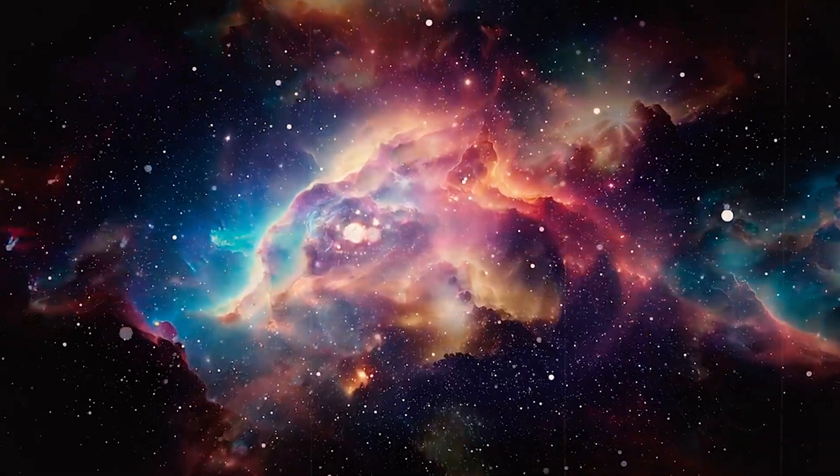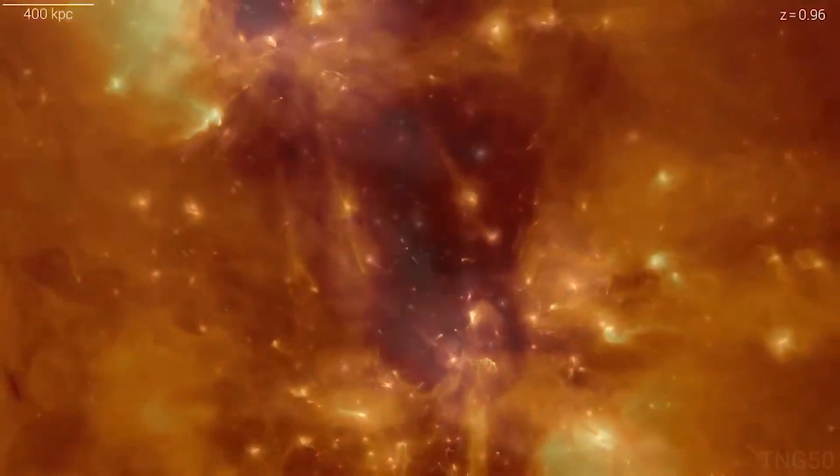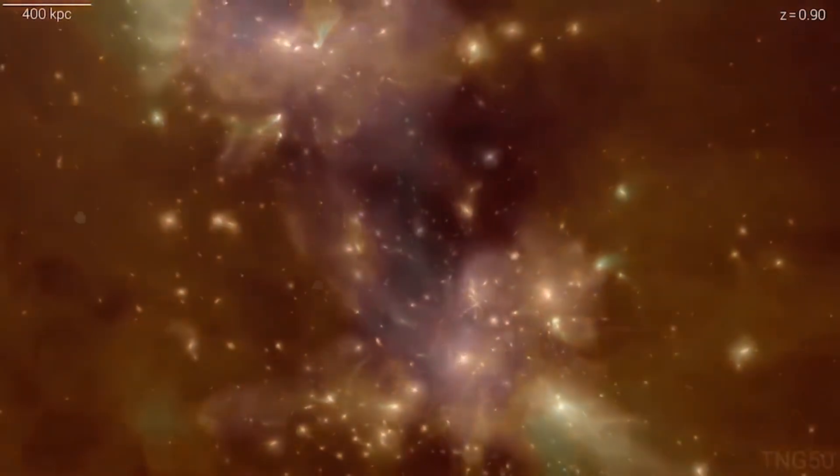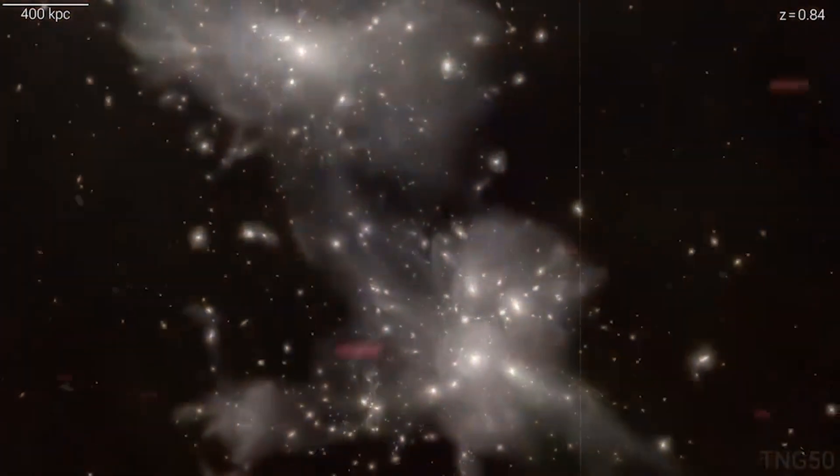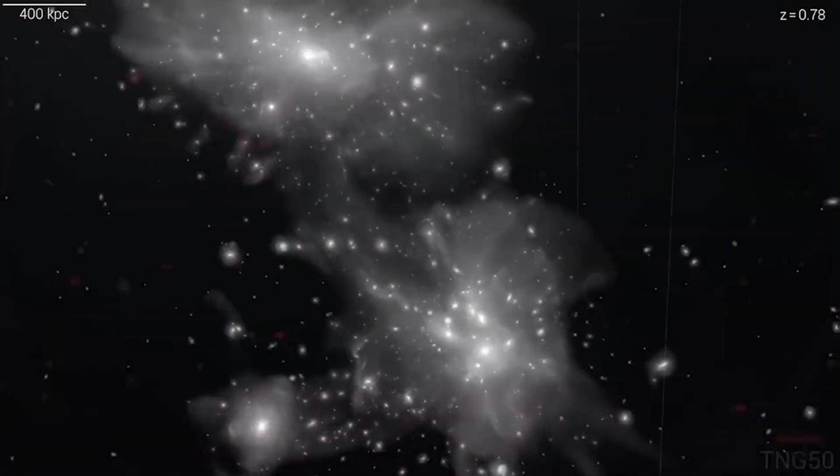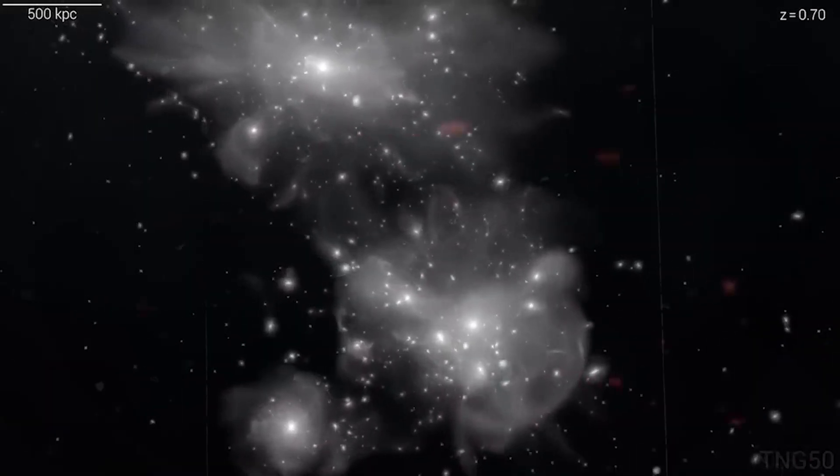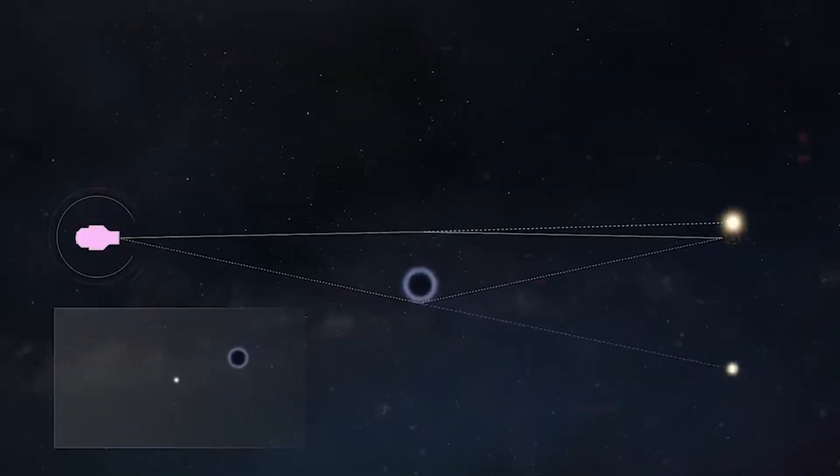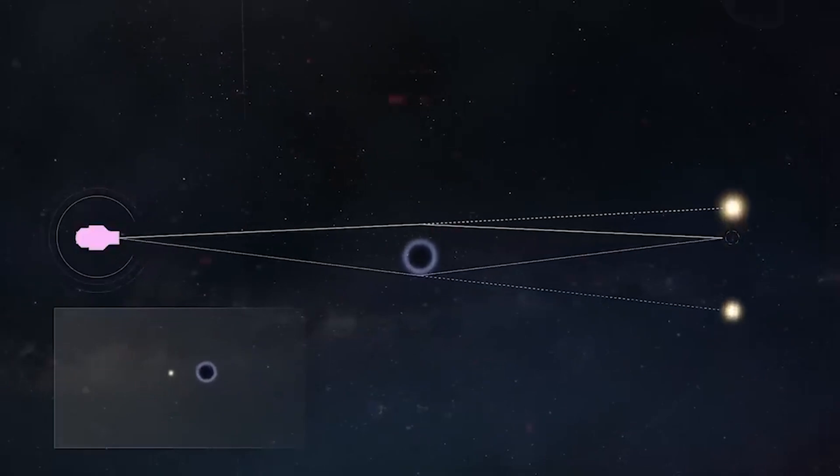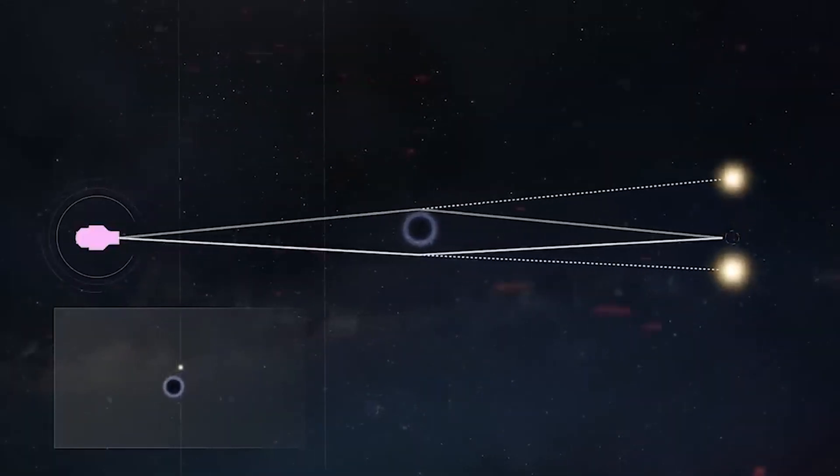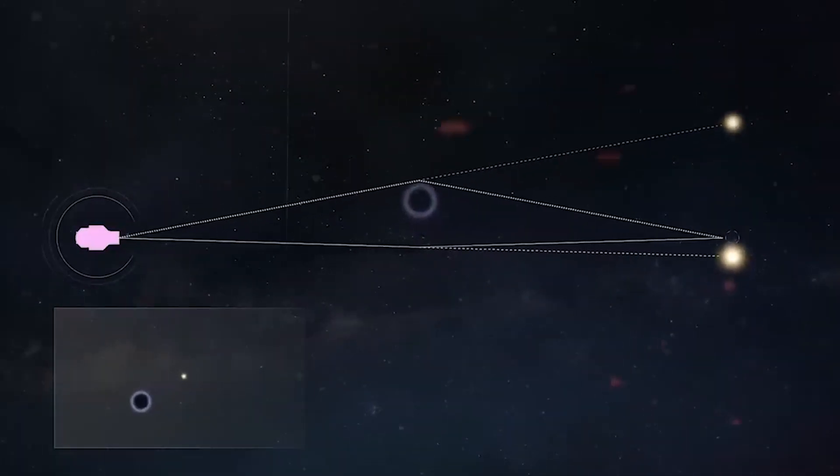The idea behind early dark energy is that the universe went through a phase early in its history where dark energy had a higher energy density than it does today. This would have affected the expansion rate of the universe, making it faster during that early period. As the universe expanded and cooled, the energy density of that early dark energy would have decreased, and its effects on the expansion rate would have diminished.